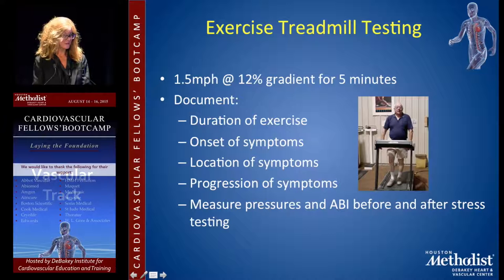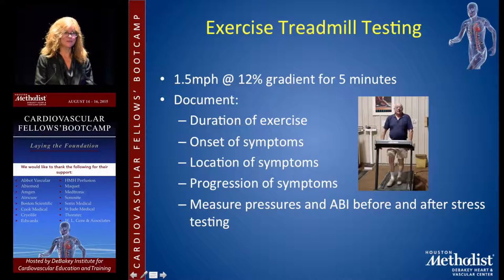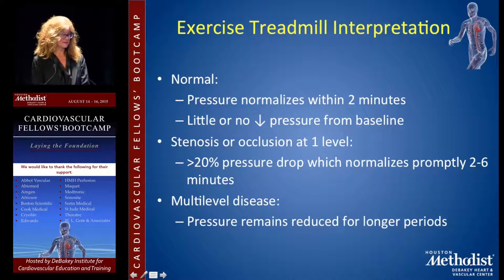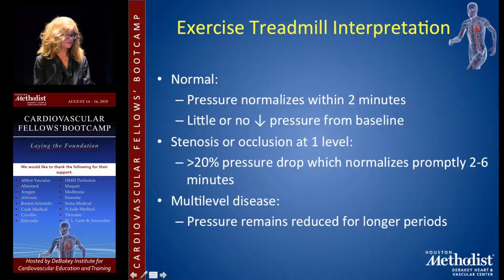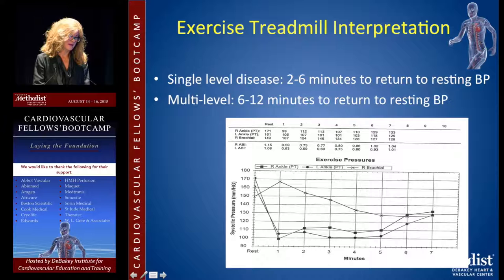Obviously there are patients you wouldn't put on a treadmill, such as someone with exertional angina. The classic protocol is 1.5 miles per hour at 12% gradient — the patient walks and tells you when symptoms occur, so you measure time to symptoms. A normal pressure should normalize within two minutes. With stenosis or occlusion, you get a greater than 20% pressure drop, normalizing at two to six minutes. Recovery over six minutes indicates single-level disease; longer recovery suggests multi-level disease.